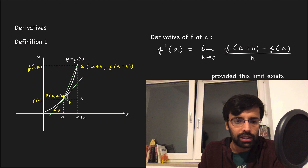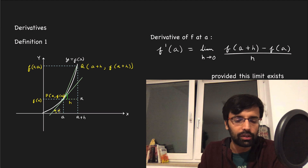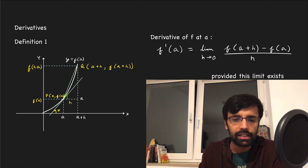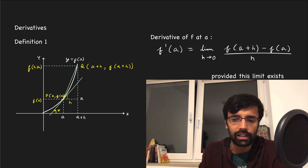If you have a derivative at any point, dy/dx equals f'(x), evaluated at x equals a, then you get the derivative there. The slope of the tangent at that point is equal to this derivative. So if you need a slope, remove the derivative and that will be the slope. In general, f'(x) is the derivative of the curve, and for a particular point we evaluate at x equals a.